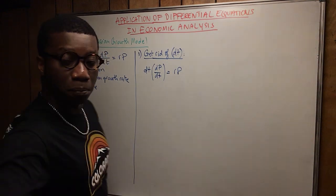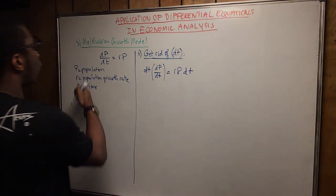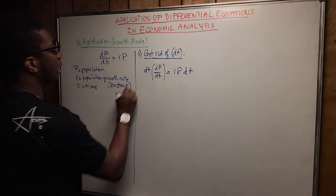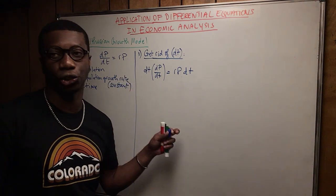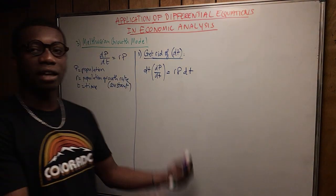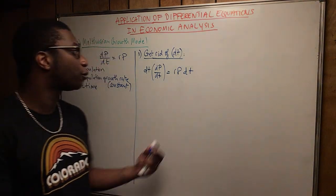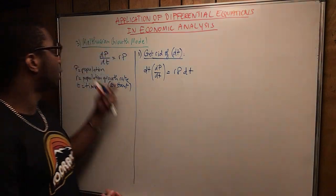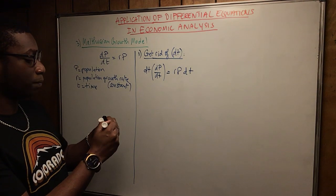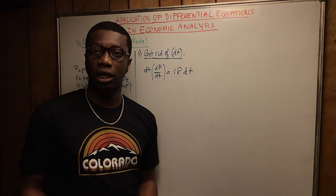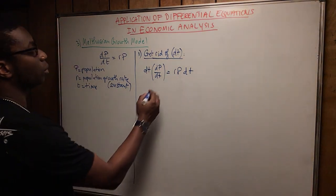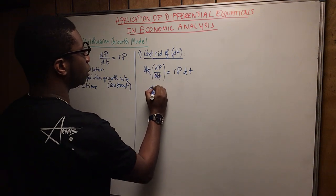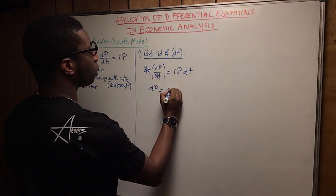The population growth rate r is a constant. There's no initial condition here — I just want to walk you through the steps of how to solve this differential equation and calculate exponential growth in population analysis. Multiplying through, the dt cancels, giving us dp equals rp dt.